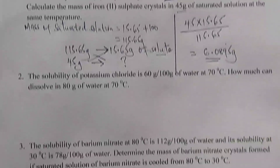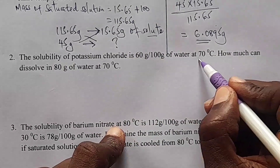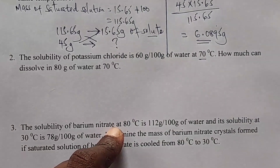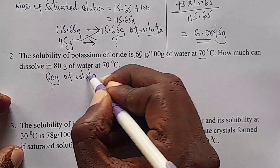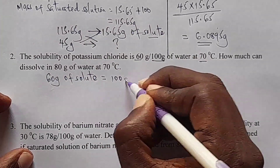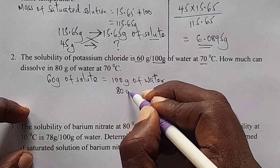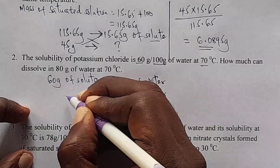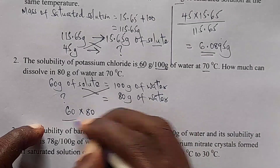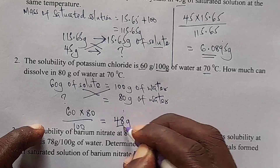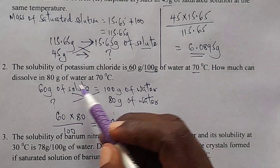Number 2: the solubility of potassium chloride is 60 gram per 100 gram of water at 70 degrees Celsius. How much can dissolve in 80 gram of water? We have 60 gram of solute dissolved in 100 gram of water. How much salt can dissolve in 80 gram of water? We cross multiply: 60 times 80 divided by 100 gives 48 gram. That is how much salt can dissolve in 80 gram of water at 70 degrees Celsius.